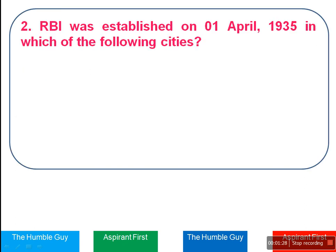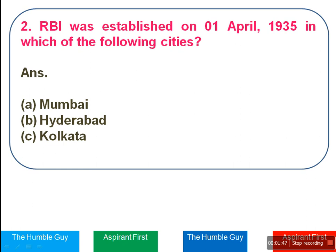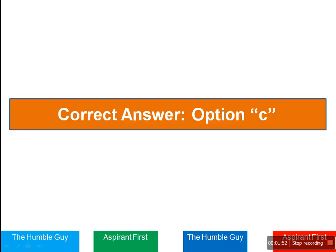In which of the following cities was RBI established? You must know that currently the headquarter of Reserve Bank of India is in Mumbai. But when it was established, it was not in Mumbai. The question is where did it happen? The right answer is Option C — Kolkata.